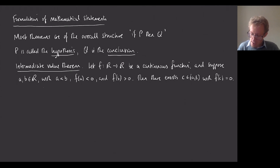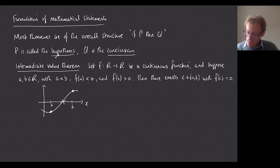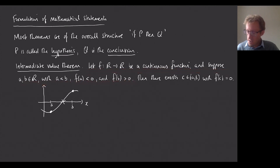The result is quite straightforward. If you have a continuous function whose graph is underneath the x-axis at point a and above it at point b, then there must be some point c in between where it crosses the axis. This is a well-stated theorem because it's clearly separated into hypothesis and conclusion: 'let' and 'suppose' set up the hypothesis P, and then 'then' signals the conclusion Q — the existence of c with f(c) = 0.